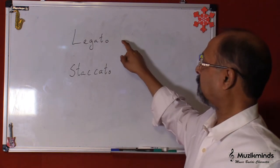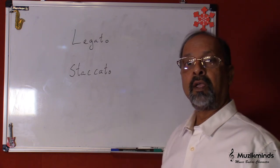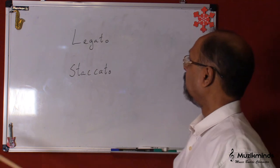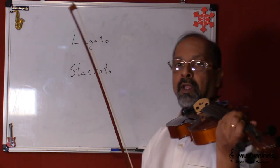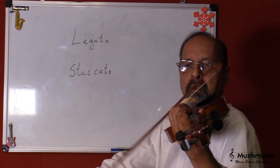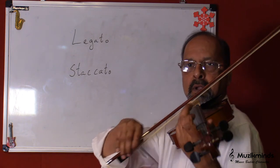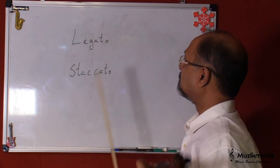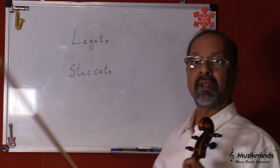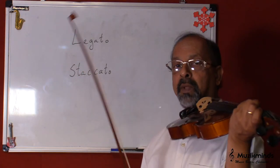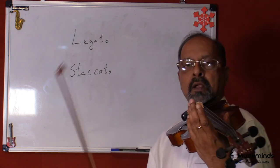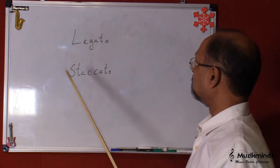Now the term legato and staccato determines the articulation of how you play. Now if I've got to play legato, it means it's nice and smooth. This is legato. Now staccato is more fragmented, it's more broken up. So the notes would be... So this is staccato.